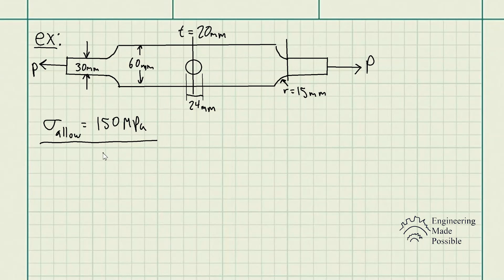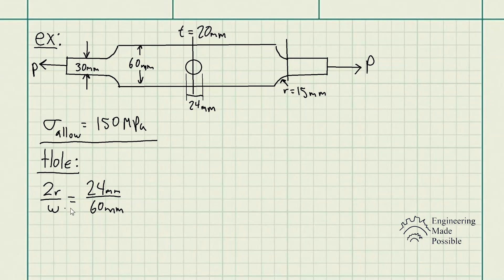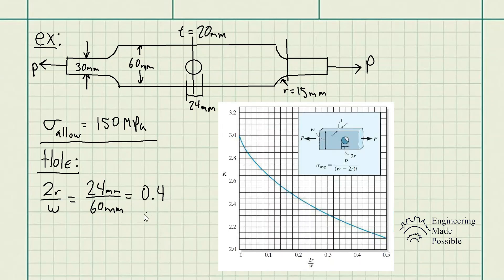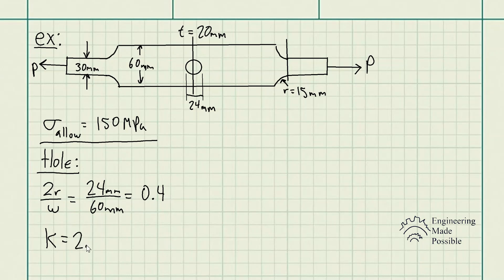Let's solve for the stress concentration at the hole first. The first parameter when looking at the graph is 2R divided by W. W is the width of the plate, 60 millimeters, and 2R is the diameter of the hole, 24 millimeters. That gives 24/60 = 0.4. Going to 0.4 on the graph and reading the K value, we get K = 2.2, which is the stress concentration factor.